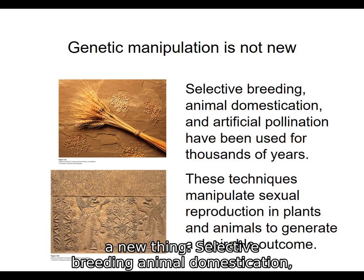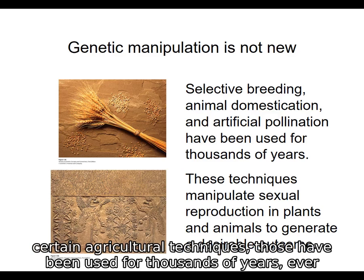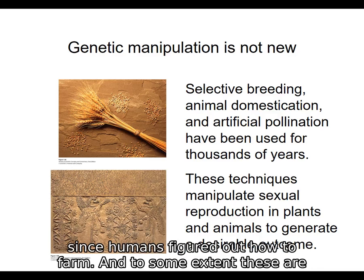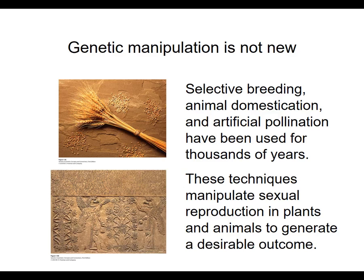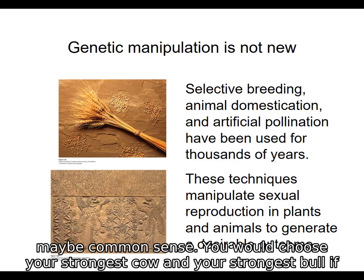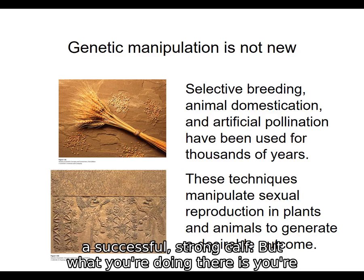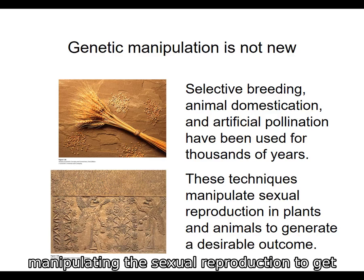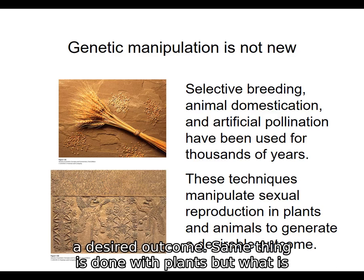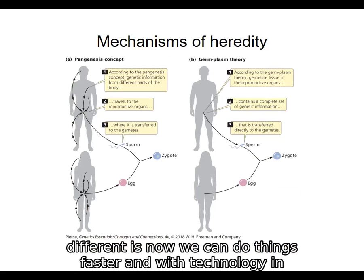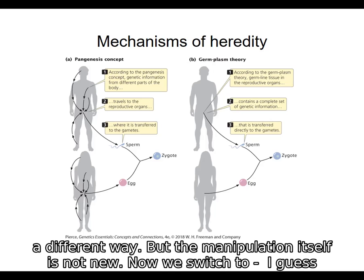Genetic manipulation is not a new thing. Selective breeding, animal domestication, and certain agricultural techniques have been used for thousands of years — ever since humans figured out how to farm. You would choose your strongest cow and your strongest bull if you wanted a strong calf. What you're doing there is manipulating sexual reproduction to get a desired outcome, and the same thing is done with plants. What is different now is we can do things faster and with technology in a different way, but the manipulation itself is not new.